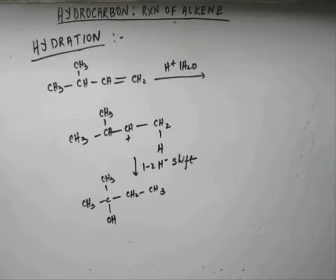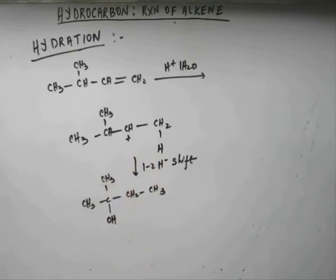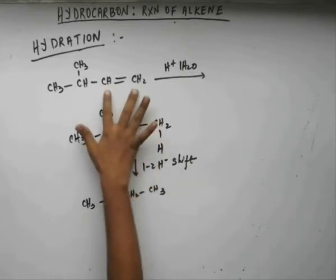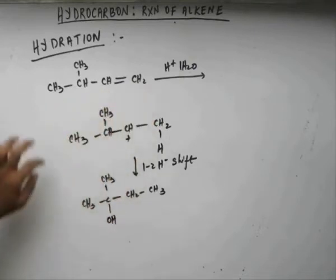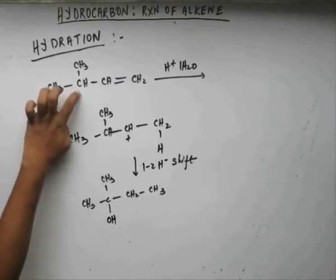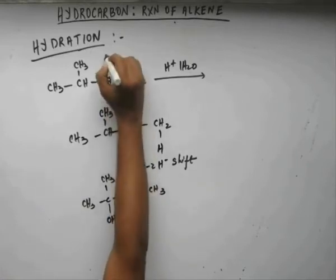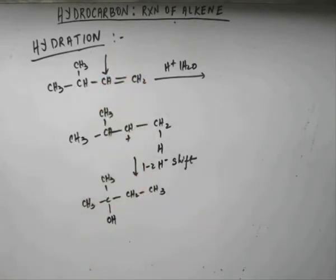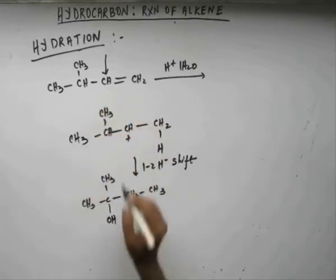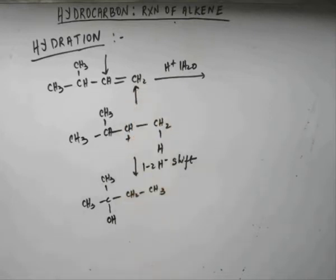In this case, the OH group gets attached to a carbon that was not forming the pi bond initially — it gets attached to a carbon not participating in the alkene formation, because of rearrangement. But suppose I want the OH group attached to a specific carbon without rearrangement. If I want OH on this carbon, or similarly on that carbon, then different reactions will be needed to facilitate such addition.